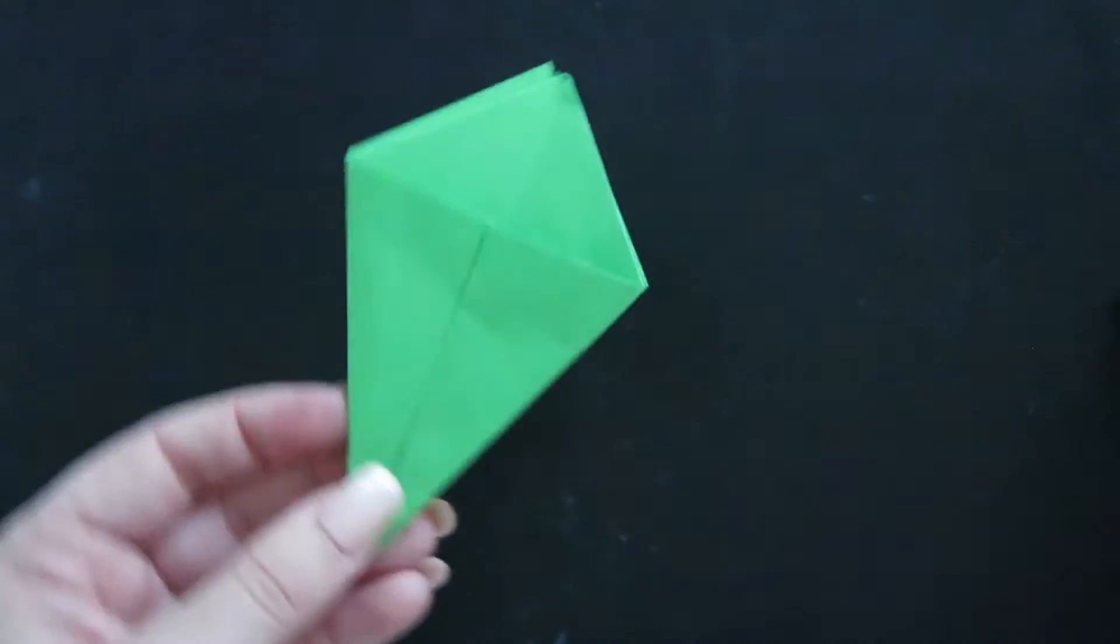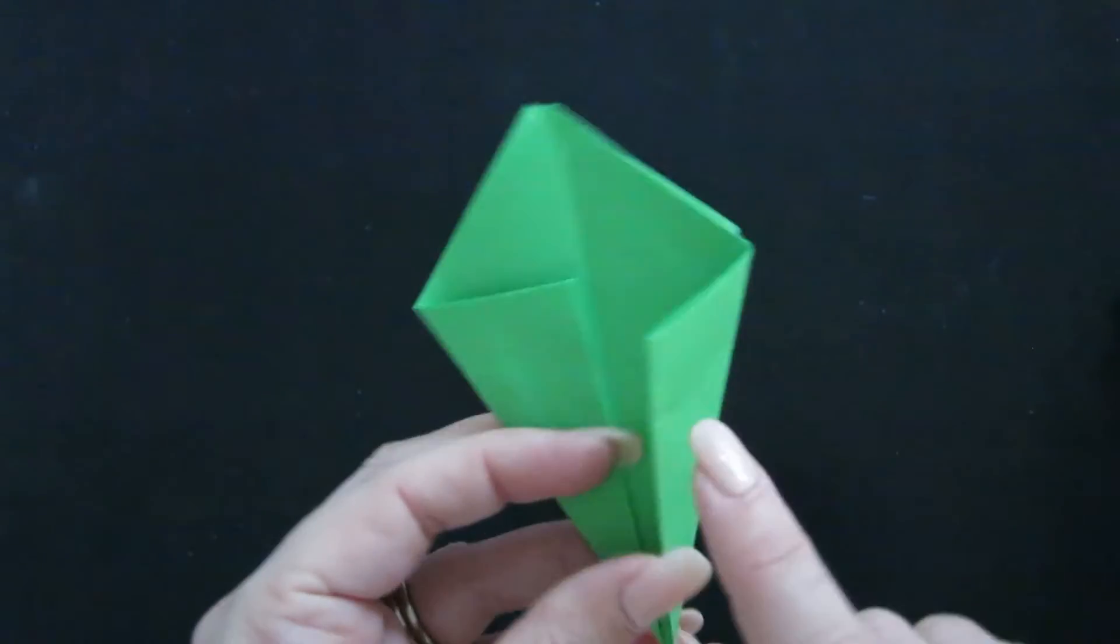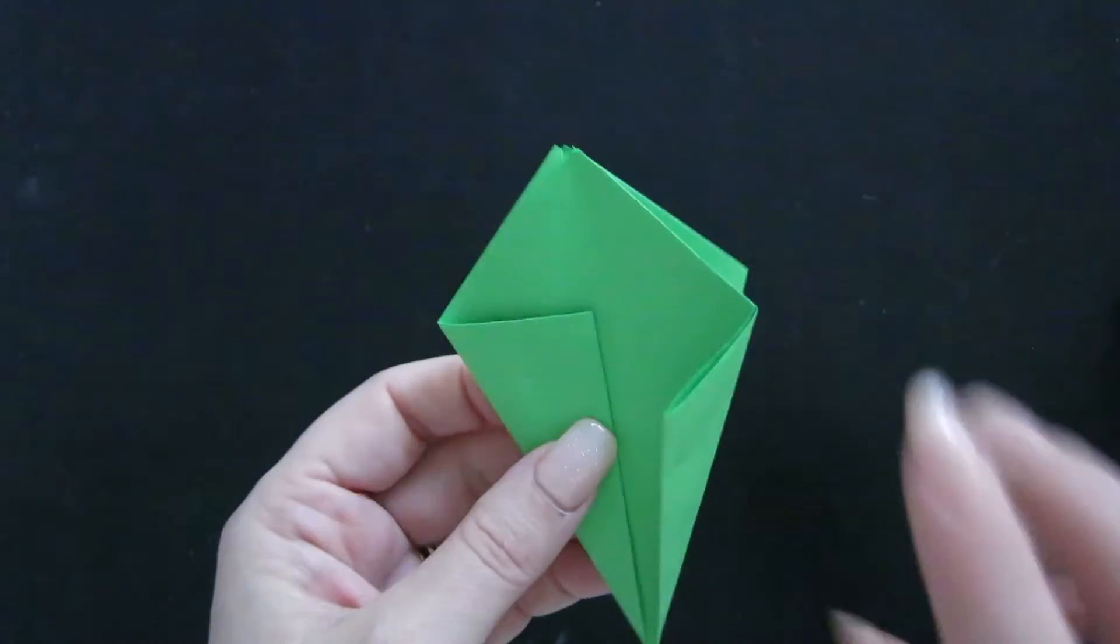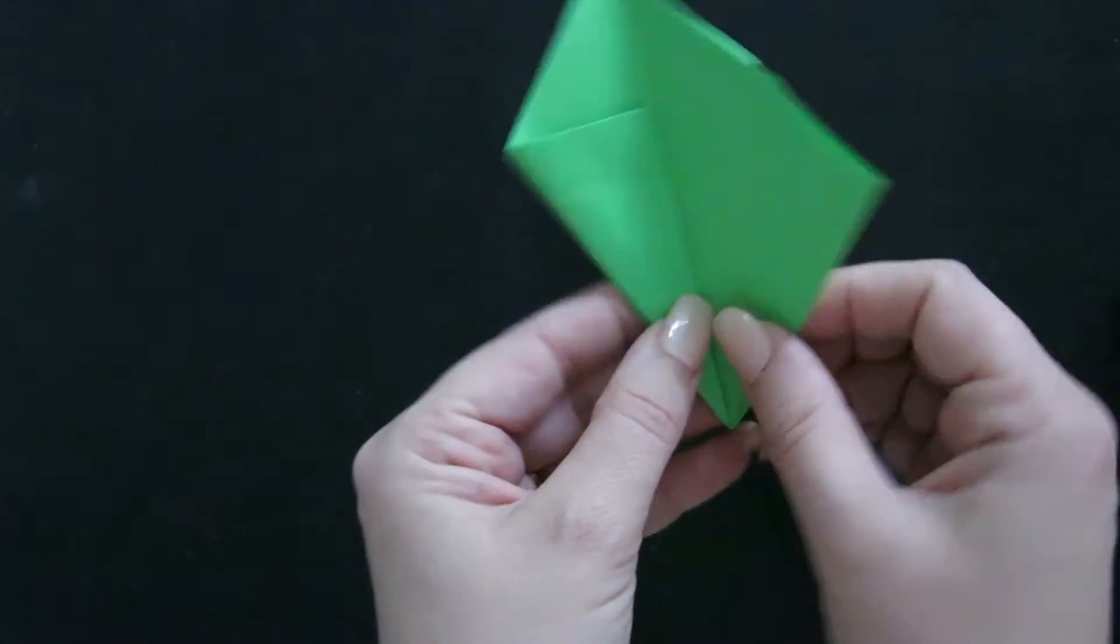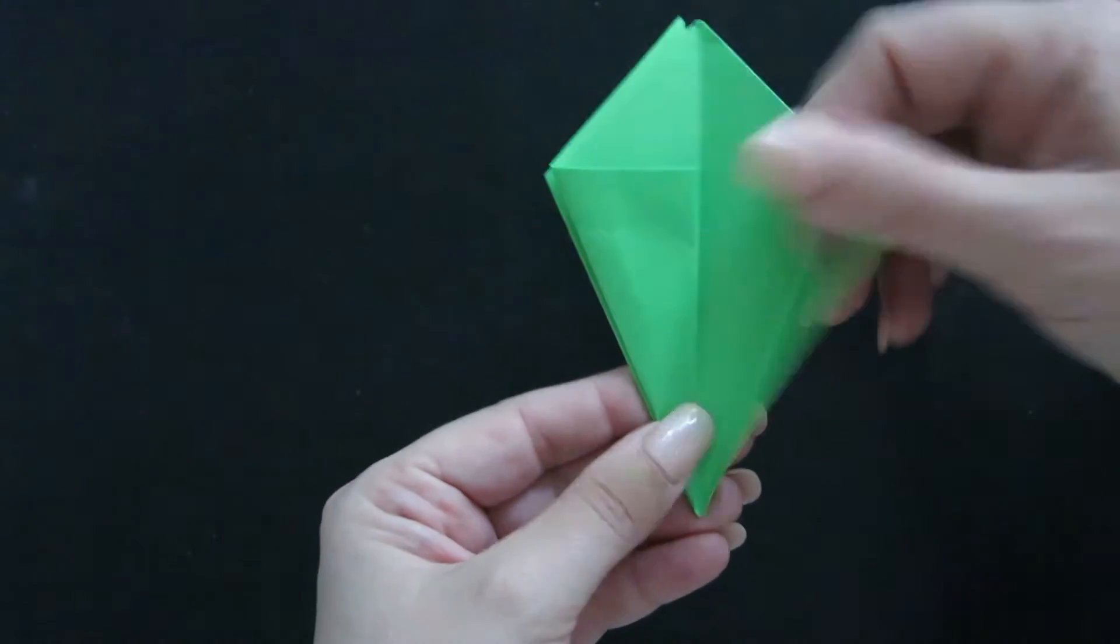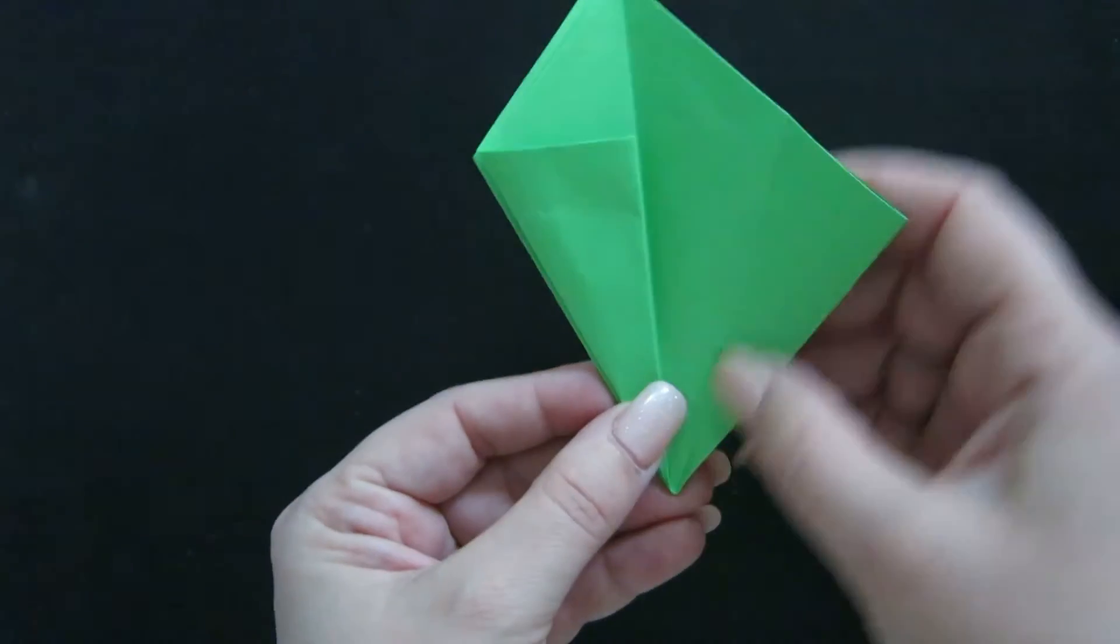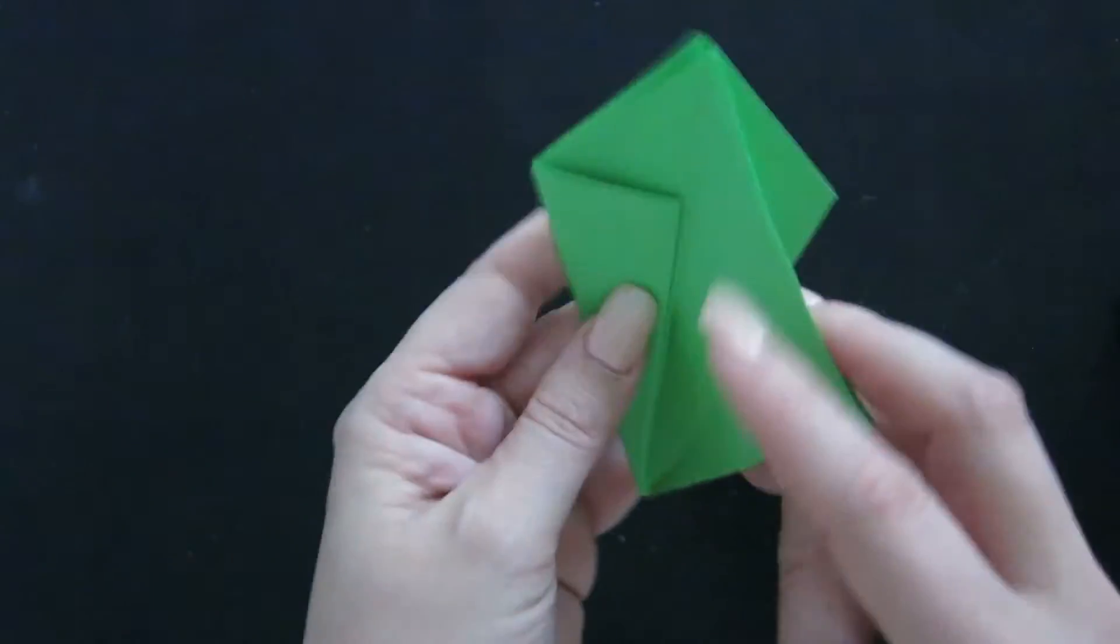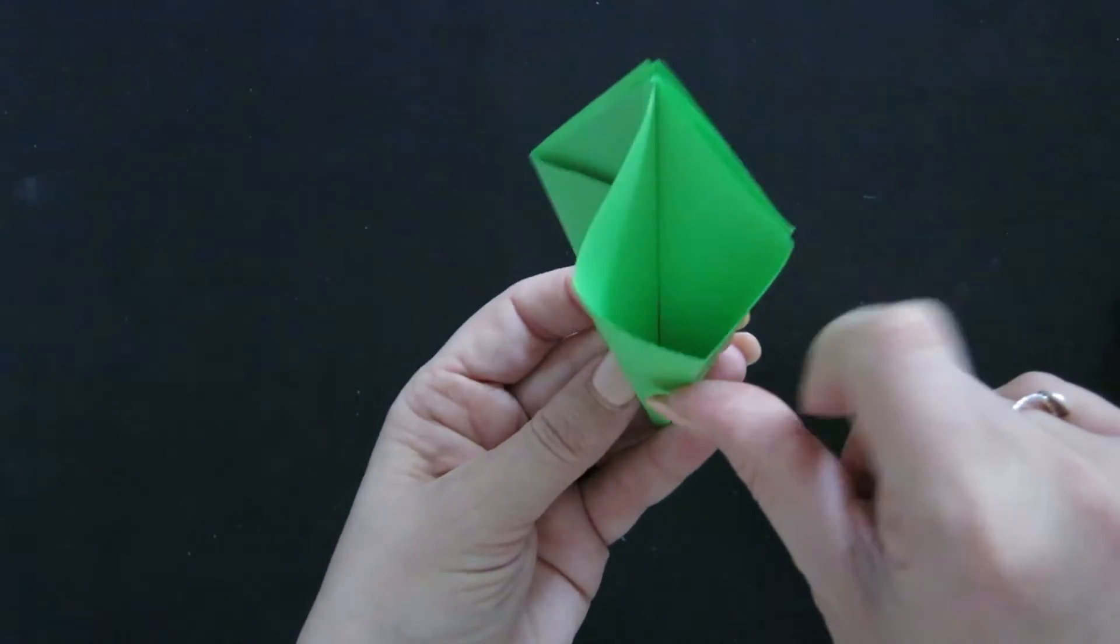Now here comes the tricky part. What we need to do is actually turn all of these folds inside out. But I'll walk you step by step, it's going to be okay. So let's open up this first flap here. So we've got that crease. This crease that you've just created is actually very important.